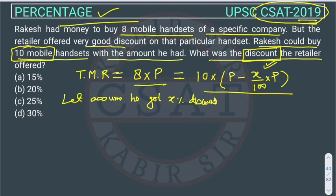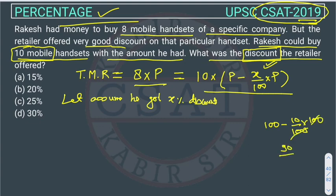Both amounts are equal to the money Rakesh is having. Previously he could buy 8 mobiles, now with the same money he can buy 10 mobiles at the discounted price, which is P minus X upon 100. For example, if the price was 100 rupees and he got a 10 percent discount, 10 percent of 100 is 10 rupees, so the final price would be 90 rupees. The same approach is applied here.